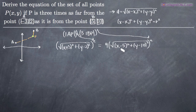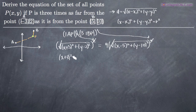Now that we have this relationship set up, it's just a matter of finding the equation of the circle P of x,y. Since both sides are the square of square roots, the squares cancel with the square roots and we're left with what's inside. So we're going to have x plus three squared plus y minus two squared on the left, and nine times x minus five squared plus y minus ten squared on the right.